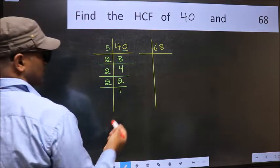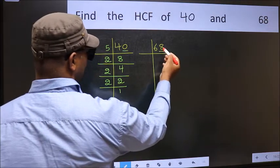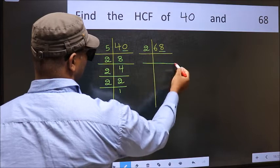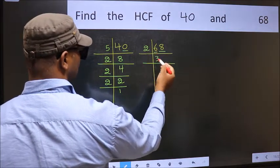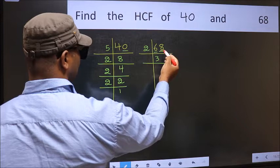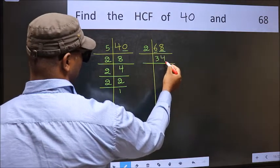Now the other number. Last digit 8, even, so take 2. First number 6. When do we get 6 in the 2 table? 2 times 3 is 6. The other number 8. When do we get 8 in the 2 table? 2 times 4 is 8.